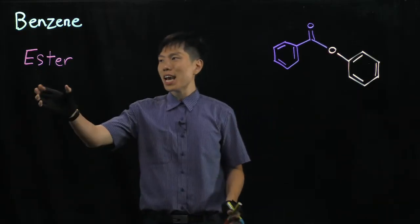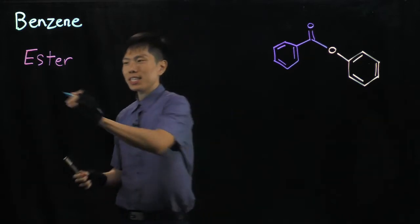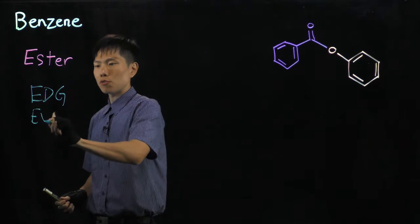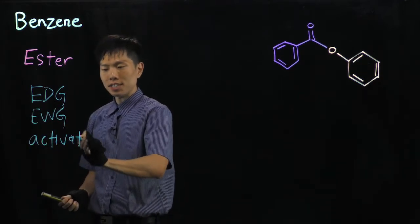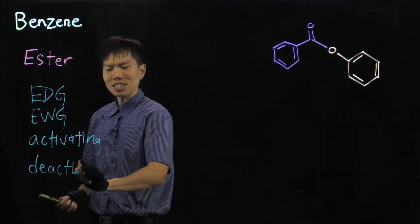So someone asked me, if we have an ester functional group attached directly to the benzene ring, is it electron donating, electron withdrawing, is it activating, or is it deactivating? So what is it actually?